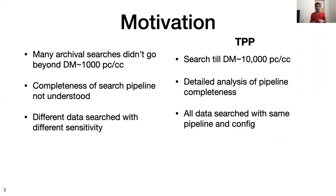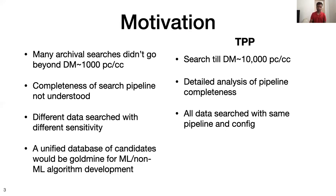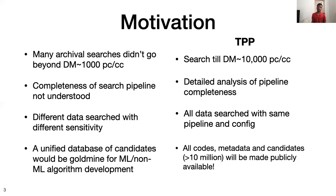In the case of TPP, we will search everything with a uniform sensitivity and with the same pipeline and same configuration, and thus will be able to combine all these results to get a better rate estimate. A unified database of candidates would also be a goldmine for machine learning and non-machine learning algorithm development, and with TPP we are going to make all these candidates, codes, and metadata publicly available so that it can be used for algorithm development.